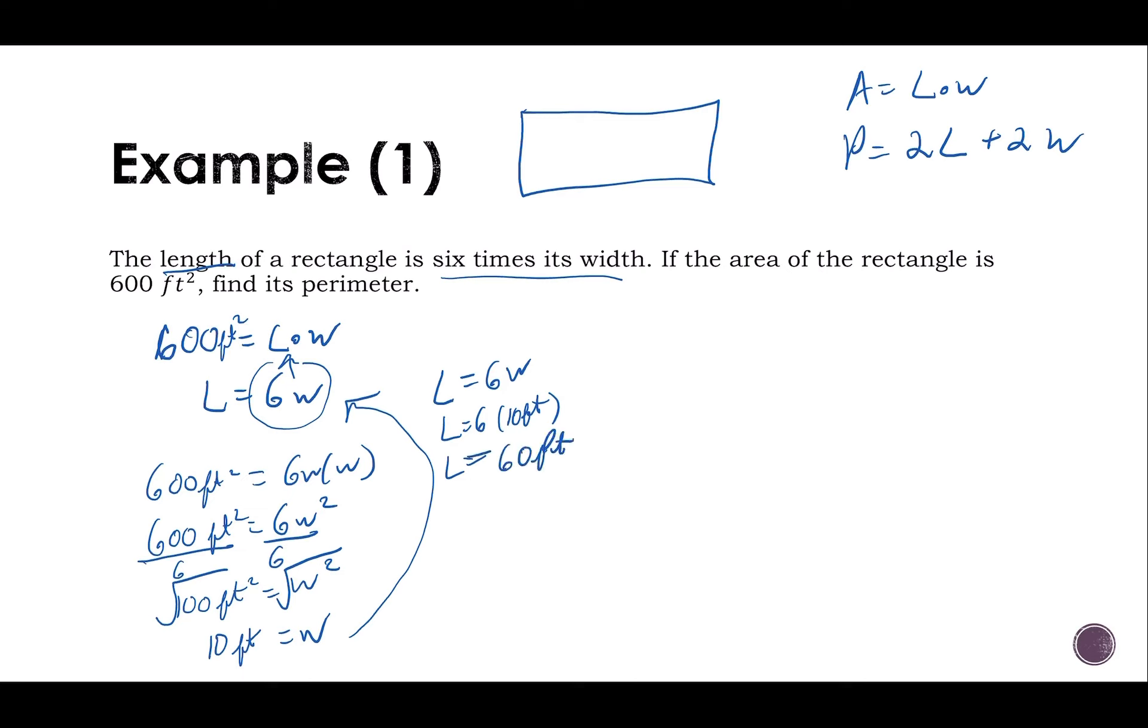Now that I know my length is 60 feet and my width is 10 feet, I can use this to solve for my perimeter. My perimeter is two times my length, which is 60 feet, plus two times my width, which is 10 feet. My perimeter is 120 feet plus 20 feet. My perimeter is 140 feet.